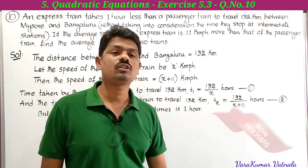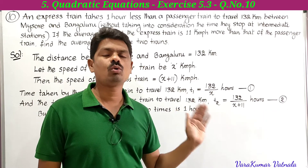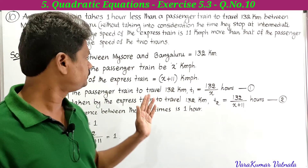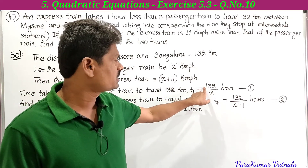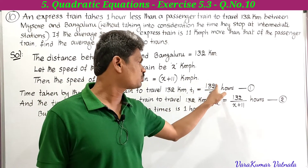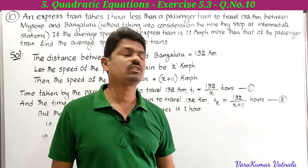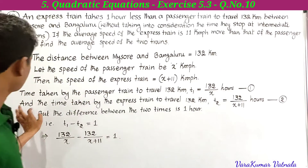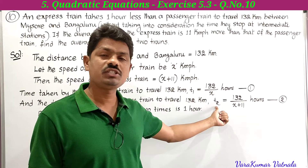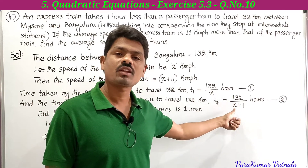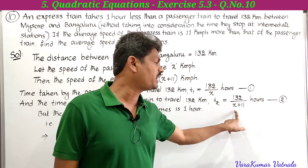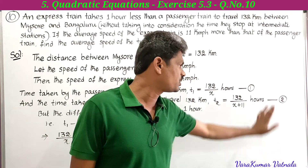The time taken by the passenger train to travel 132 kilometers: using the formula time equals distance by speed, t1 equals 132 by x hours — call this equation 1. The time taken by the express train, t2, equals 132 by (x plus 11) — call this equation 2.